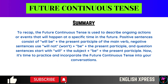To recap, the future continuous tense is used to describe ongoing actions or events that will happen at a specific time in the future. Positive sentences consist of 'will be' plus the present participle of the main verb. Negative sentences use 'will not' (won't) plus 'be' plus the present participle. And question sentences start with 'will' plus the subject plus 'be' plus the present participle.